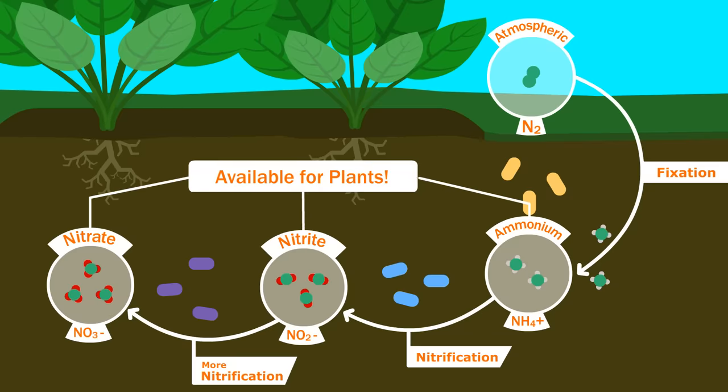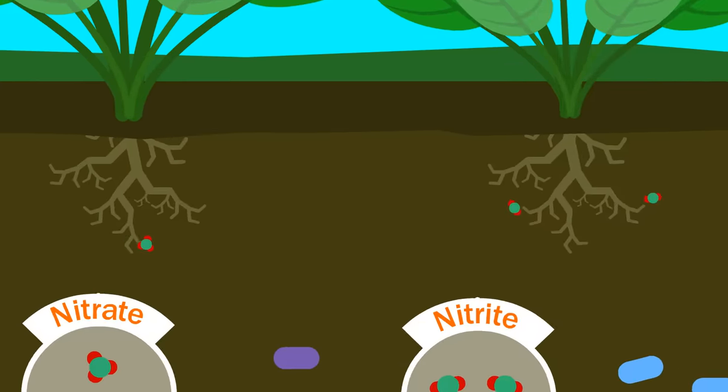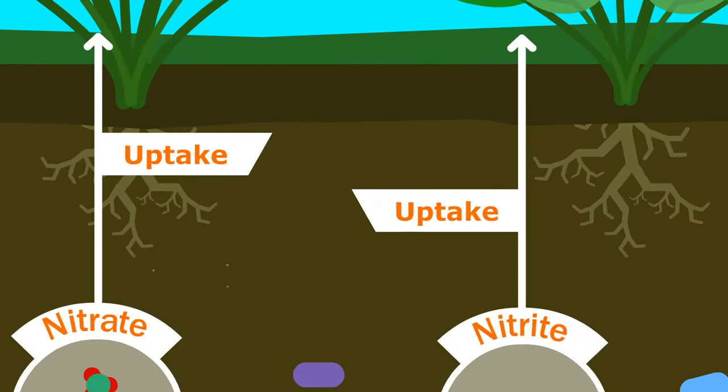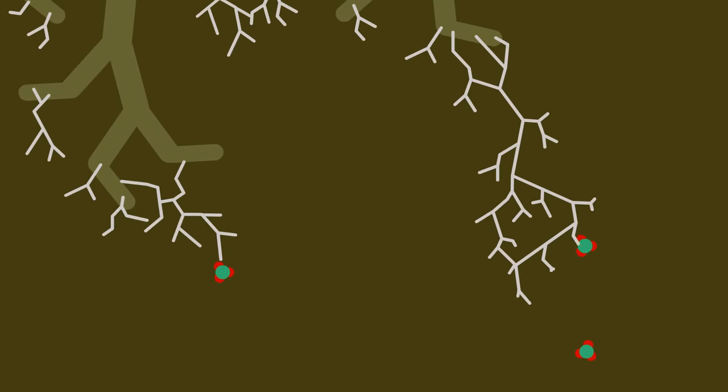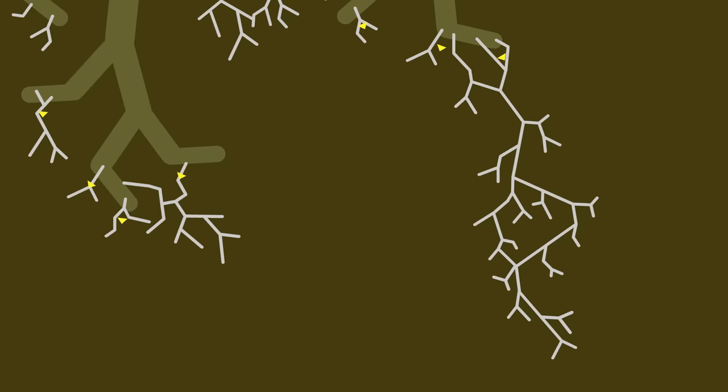All of these forms of nitrogen are available for plants, especially nitrate, which is the easiest for plants to use. Plants can take this up directly if it is near their roots, but they most often rely on strands of fungi that attach to their roots and bring nutrients to them in exchange for the sugars and carbohydrates the plant roots exude.